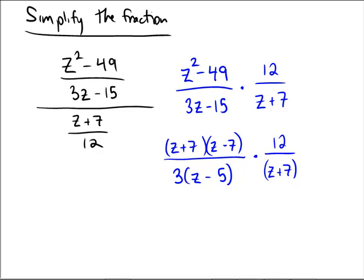So now, before we do the final answer, is there any simplification we can do before we multiply? Sure. Now we can see the z plus 7 and the z plus 7 canceling.